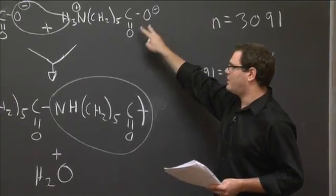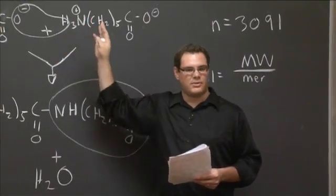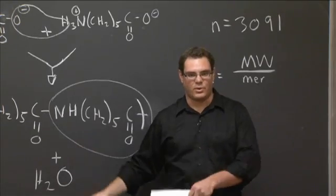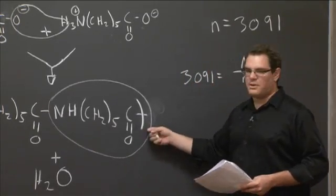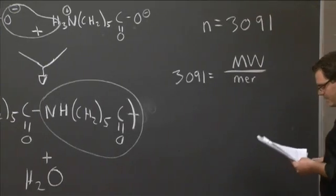We have six carbons. We have 11 hydrogens, one nitrogen, and one oxygen in this mer unit. We're not going to take the full complete end unit. We're not counting this O. We're not counting those two H's. We're dropping off 18 grams per reaction into water. So this is our mer unit. Let's calculate the mass of our mer unit.